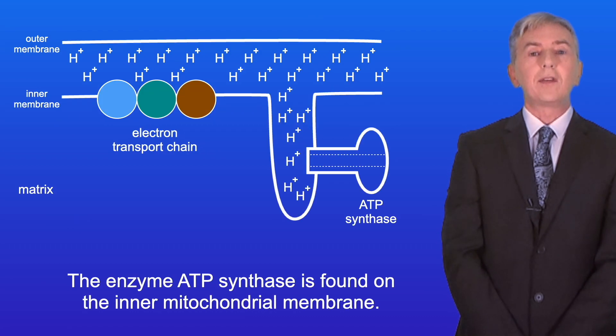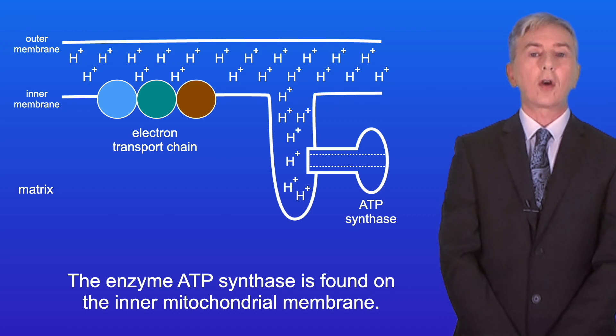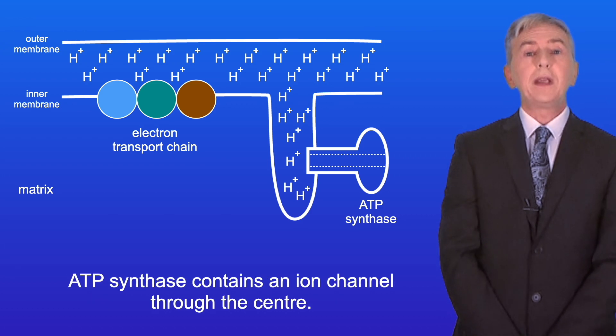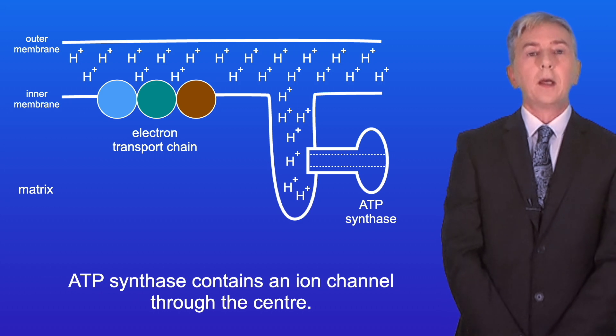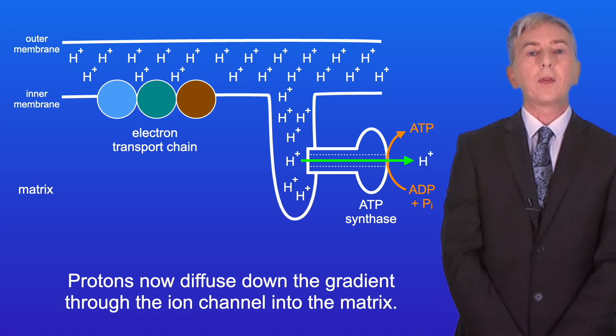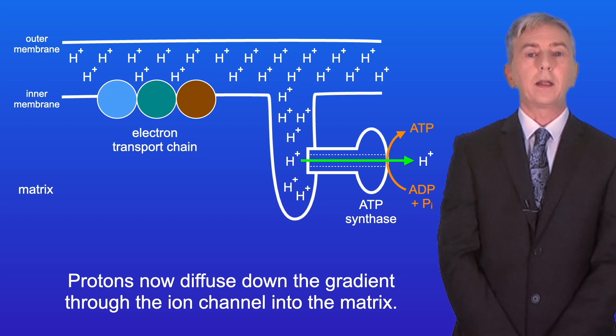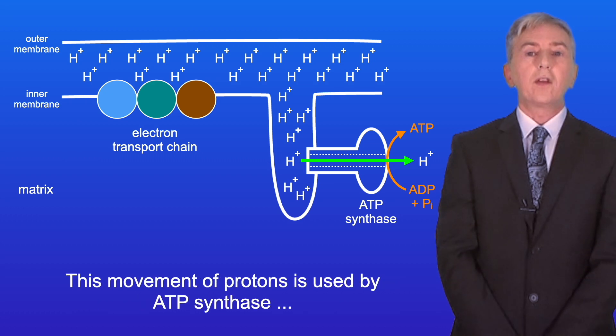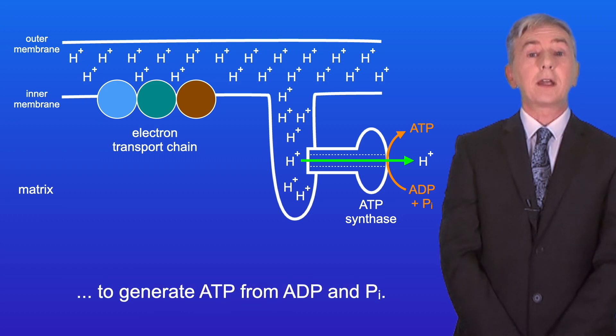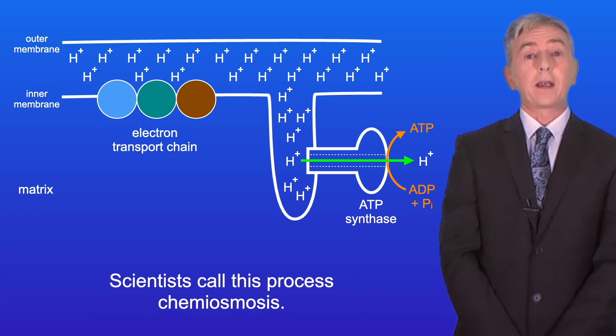The enzyme ATP synthase is found on the inner mitochondrial membrane, and ATP synthase contains an ion channel through the center. Protons now diffuse down the gradient through the ion channel into the matrix. This movement of protons is used by ATP synthase to generate ATP from ADP and Pi. And scientists call this process chemiosmosis.